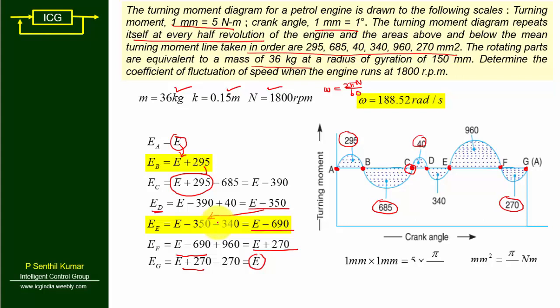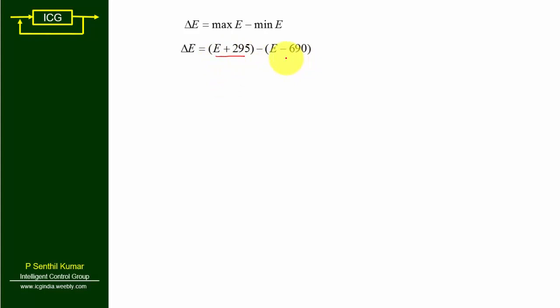Now we need to find maximum and minimum energy. From the calculated values, the maximum energy is E + 295 and the minimum energy is E − 690. Therefore, del E = maximum energy − minimum energy = (E + 295) − (E − 690). Cancelling E on both sides gives del E = 985 mm².